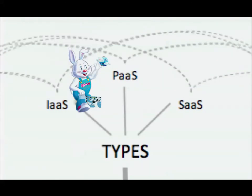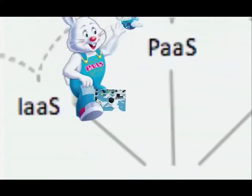Software as a service — most of us probably use on a day-to-day basis if you use anything from Google. Google applications are all available to everybody, you're all using the same code base. In the public arena that would be Salesforce.com — they're a big player in the SaaS marketplace. But for our space, we need to look at infrastructure and platform as a service.